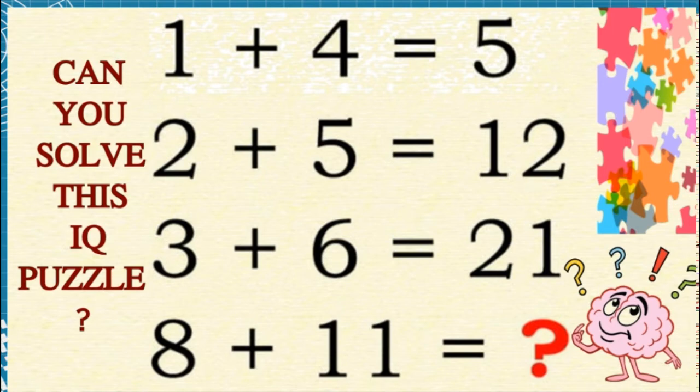Let's assume. In mathematics, we can assume as well. 2 plus 5 is equal to 12. The third equation is 3 plus 6 is equal to 9. What is written? It's written as 21. Okay, assume 3 plus 6 is equal to 21.